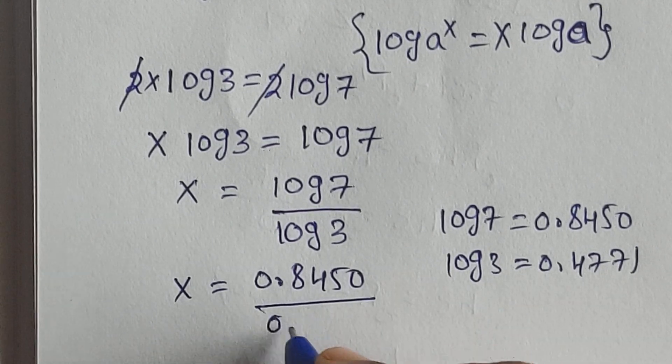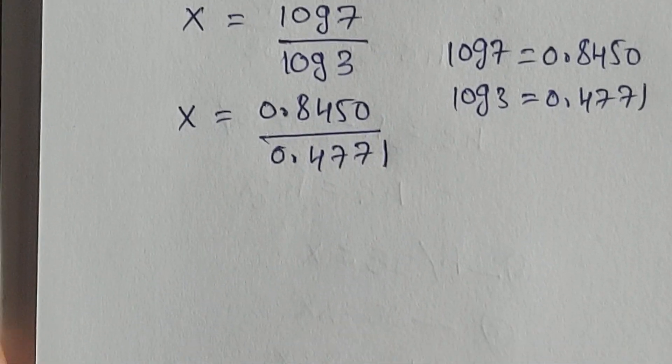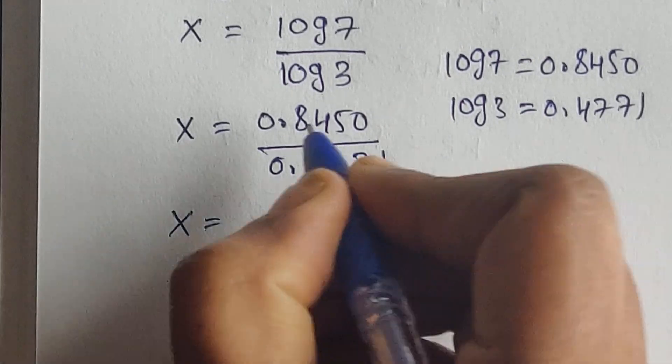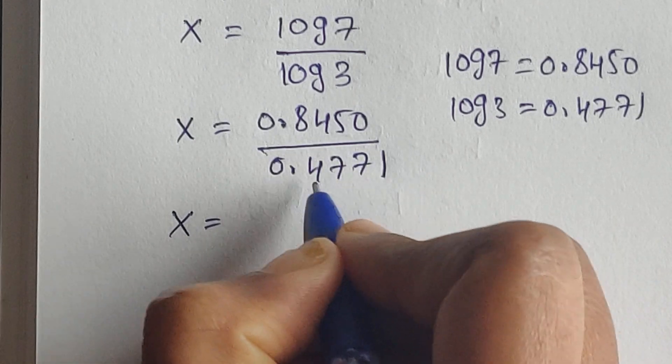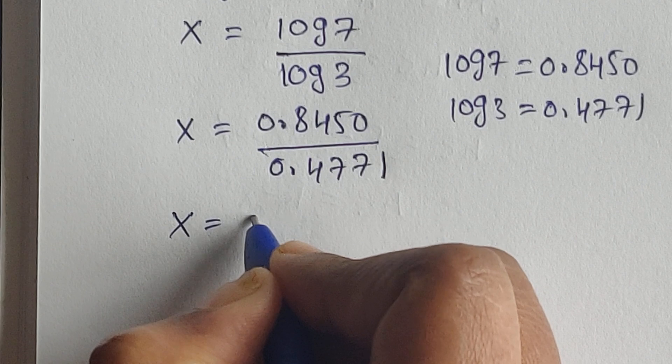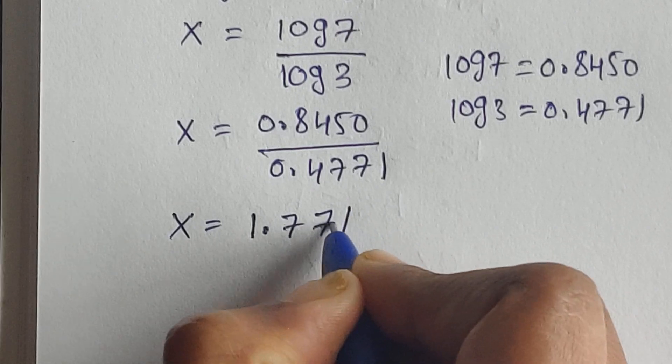So now x equals 0.8450 divided by 0.4771, which equals 1.771. So this is the x value.